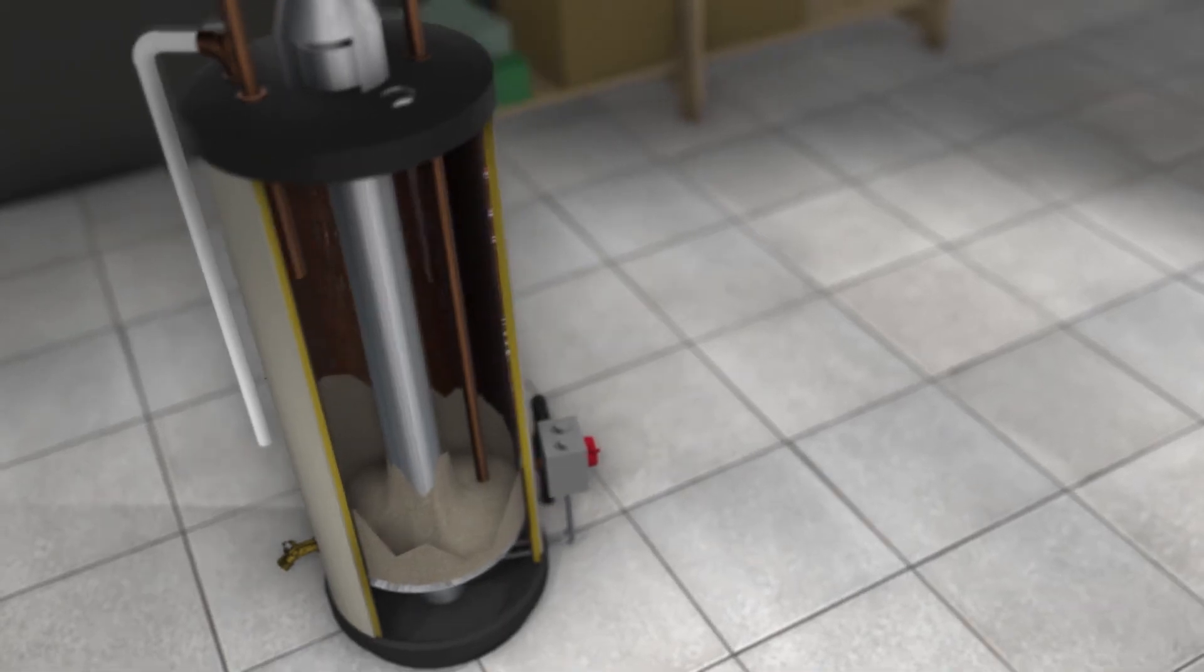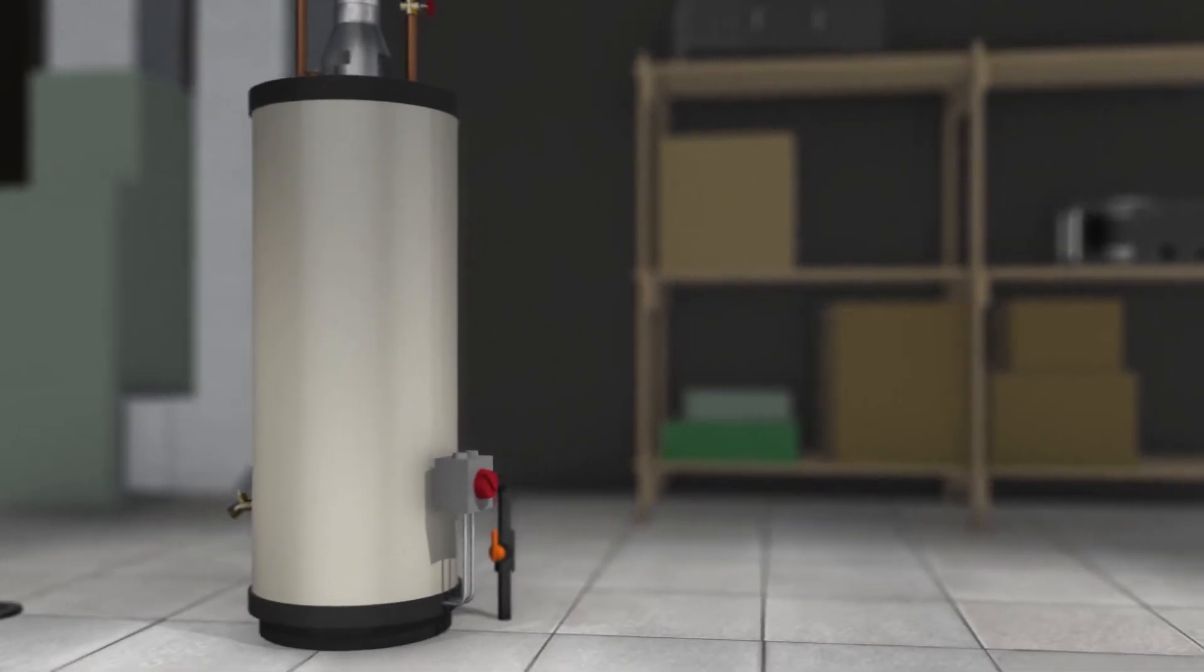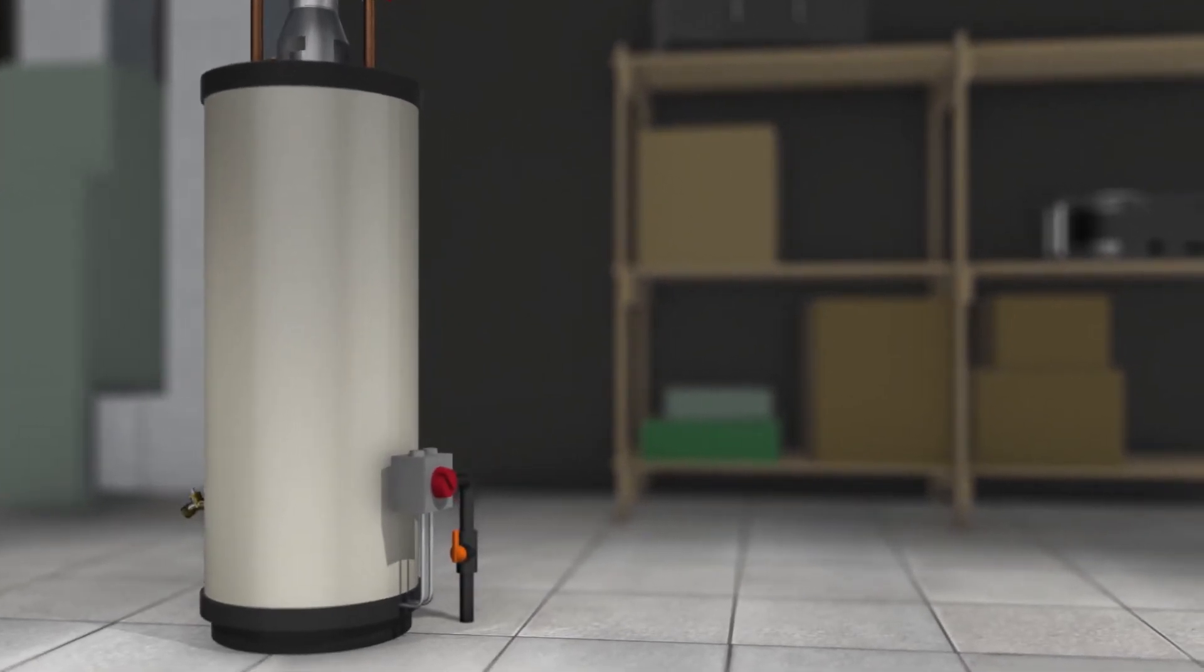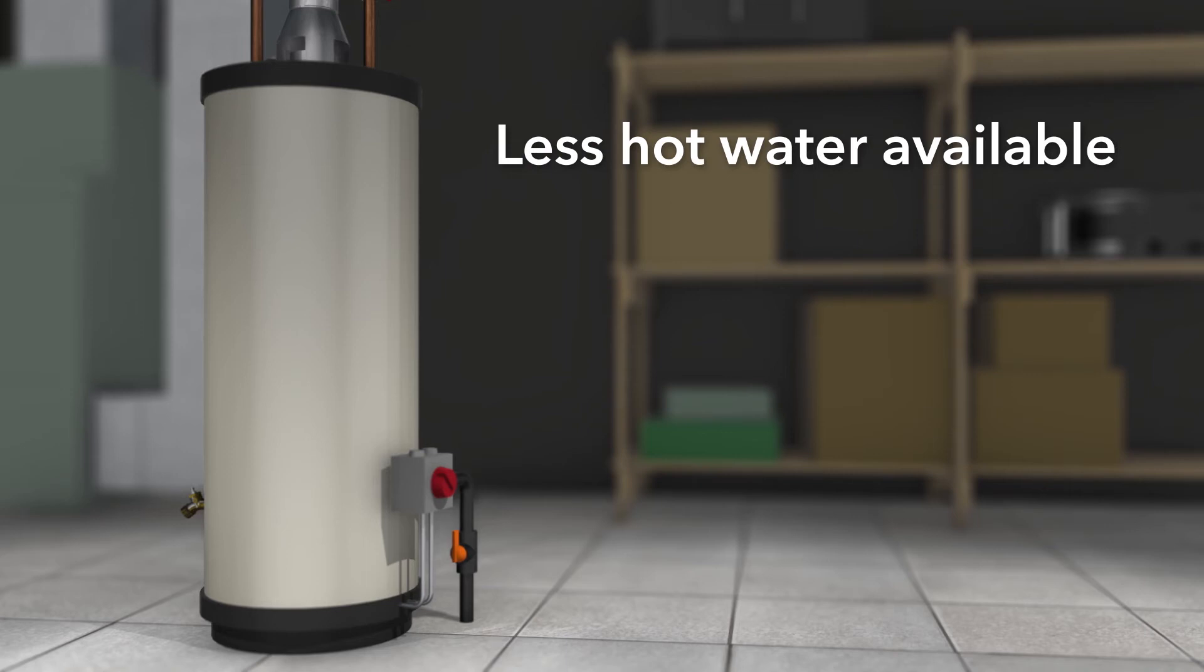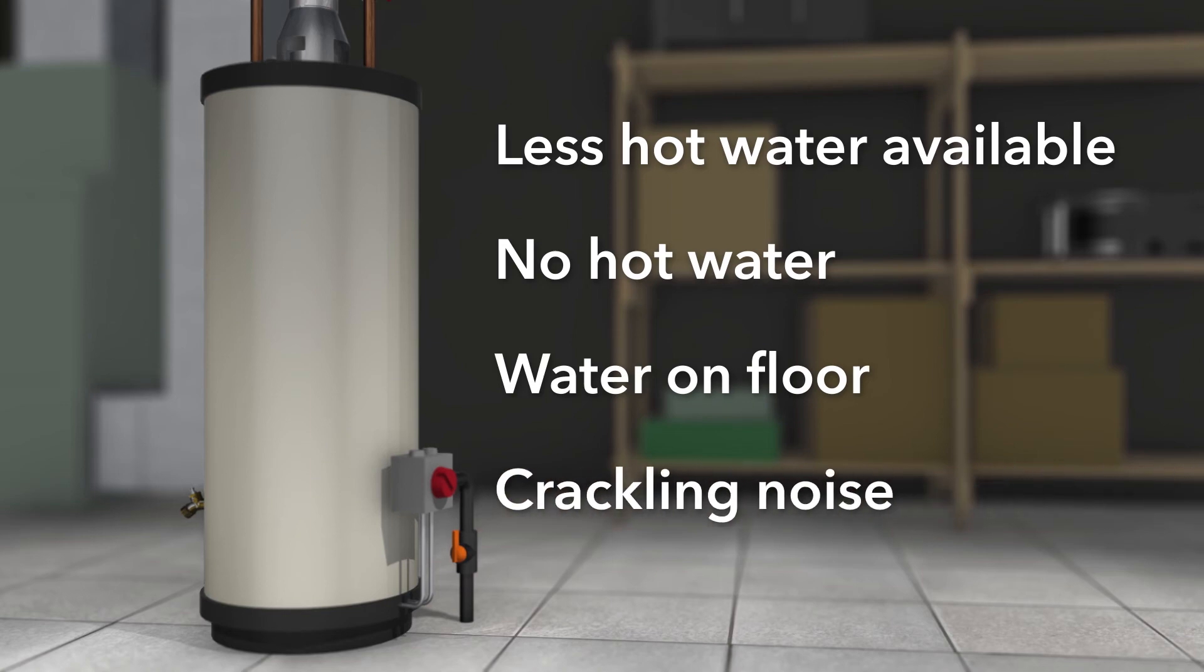How do you know if your water heater might be starting to break down? It gives off some obvious signs, which include: the water heater isn't heating enough hot water, there's no hot water at all, water drips or leaks on the floor around the water heater, or you hear a crackling noise when it's heating.